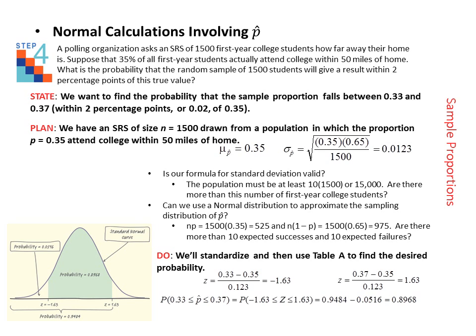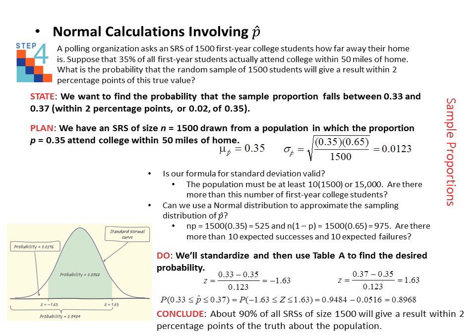Lastly, we conclude and the conclusion is just a statement in context regarding your findings. So to answer the question, about 90% of all simple random samples of size 1500 will give a result within 2 percentage points of the truth about the population. And so that is our response, about 90%.